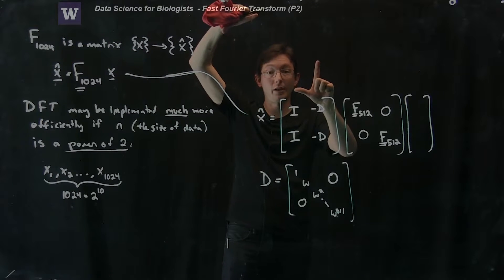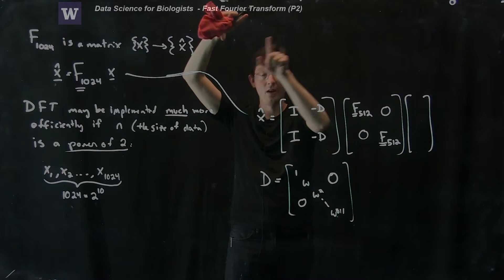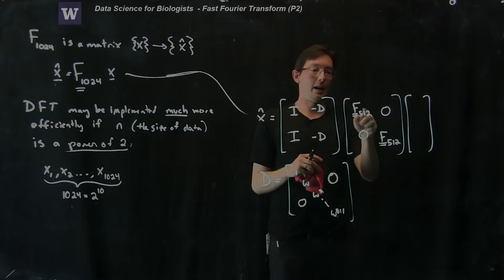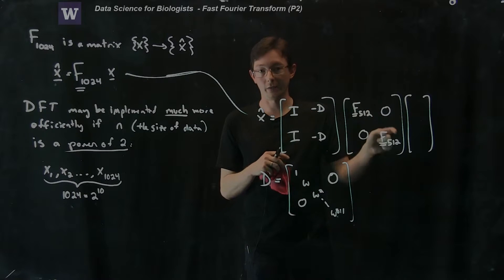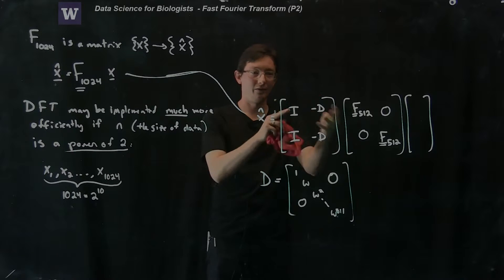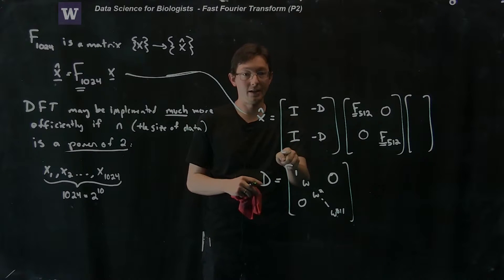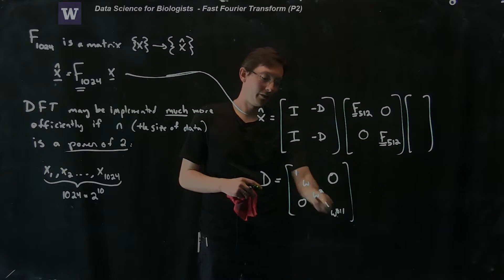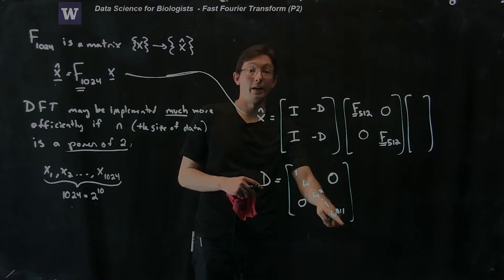And I can rewrite it as two 512 size Fourier transform matrices times this fancy kind of interleaving matrix of identities and then these diagonal elements from 1 up to omega 511.